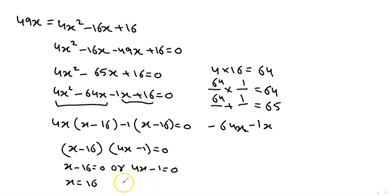X is equal to sixteen, aur x is equal to one upon four. Ab ye batao kis ko ignore karoge? One upon four. One upon four is ignored. Mein reason bata raha hon. Because total students cannot be in fractions. To one upon four ko ignore karoge.